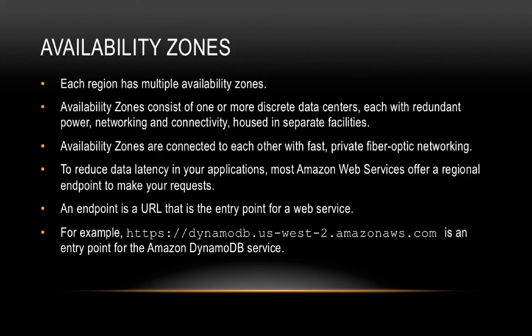We then have the concept of availability zones. Each region has multiple availability zones. Availability zones consist of one or more discrete data centers, each with redundant power, networking, and connectivity, housed in separate facilities. Availability zones are connected to each other with fast private fiber optic networking.